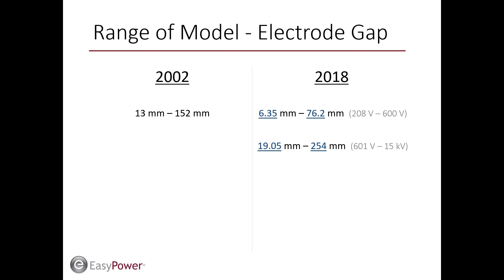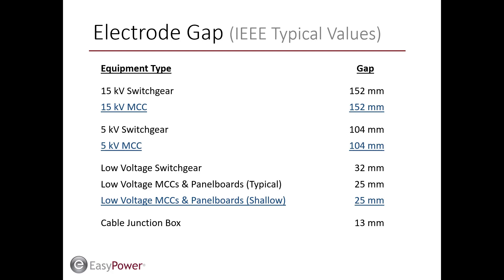The range of electrode gap supported by the new arc flash model is also now dependent on voltage. The most significant changes are seen on the high end of the range: a 50% decrease in maximum gap for low voltage and a 50% increase in maximum gap for high voltage. Similar to the previous standard, IEEE provides typical electrode gap distances. Although the quantity of equipment types in this table has expanded in 2018, the typical values are equivalent to those from 2002.